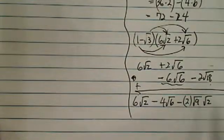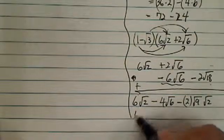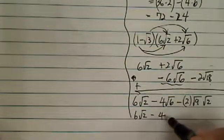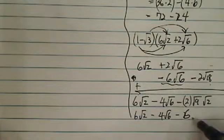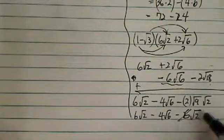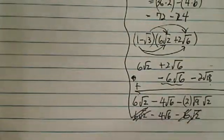That's how I get 18 here. 6 radical 2, minus 4 radical 6, minus 2 times 3, which is really 6 radical 2. Radical 6, radical 2 cancels out. So, I have a minus 4 radical 6.